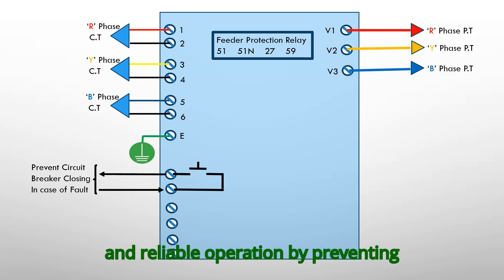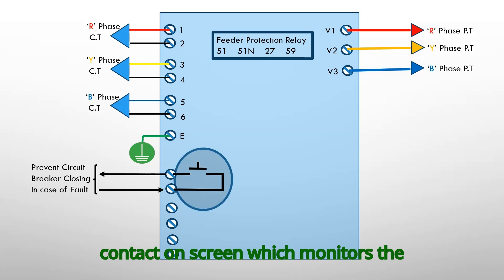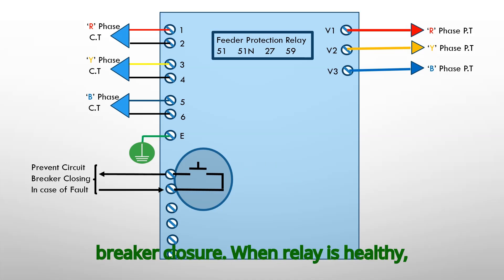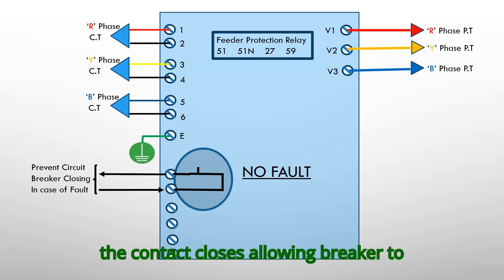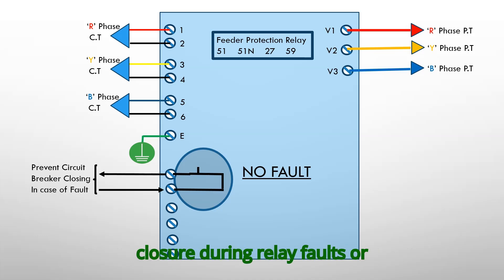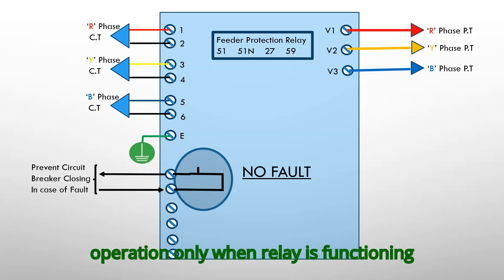Interlocks ensure safe and reliable operation by preventing unwanted breaker closures. Notice the contact on screen which monitors the relay health. When the relay is unhealthy, the contact opens, preventing breaker closure. When the relay is healthy, the contact closes, allowing the breaker to close if the close command is given. This interlock mechanism prevents breaker closure during relay faults or maintenance and ensures breaker operation only when the relay is functioning correctly.